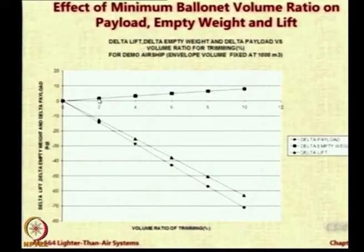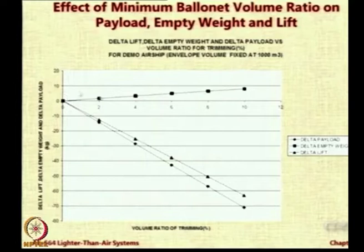Recall our discussion from last time — for trim conditions. You should need something more for trim conditions because if you have two ballonets, front and back, you can use them differentially to provide trim, and that trim can reduce drag during flight significantly. How much should we give? According to our analysis, we used 2%. The logic and justification: I can use 10%, 8%, 6%, or 2%. This figure tells you how much is the change in empty weight. Up to 2% ballonet, the empty weight change is only about 2 kg approximately, but if I have 10% ballonet it becomes almost 8 to 9 kg.